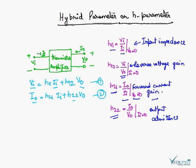And H22 is given by output current upon output voltage, keeping input current zero. By short circuiting the input, we keep the input current zero. It is the output admittance.